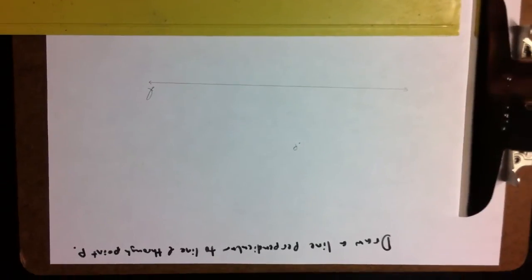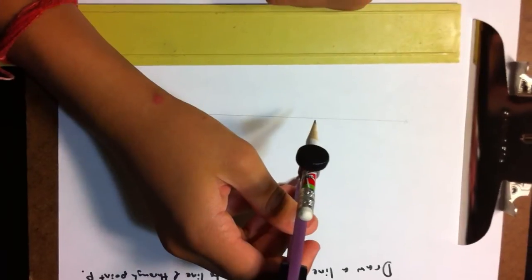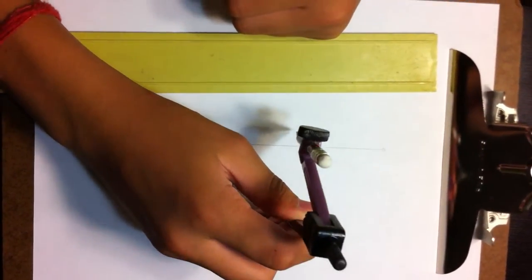And so, you're wondering, like, how am I supposed to do this? So what you do is set your compass with a point sticking on point P